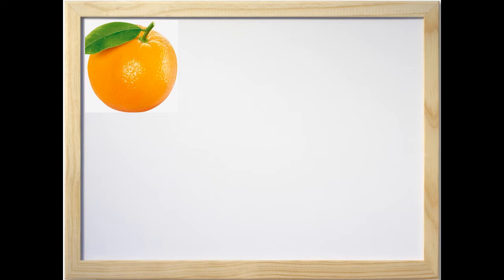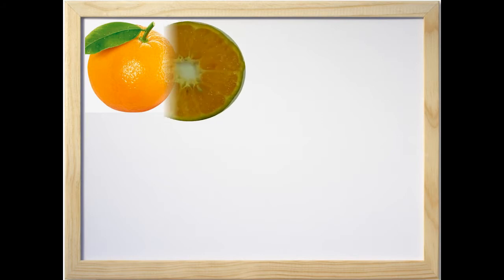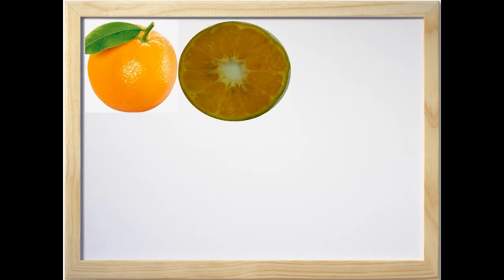I will cut this orange into thin slices. Can you see the slice? What is the shape of this slice? Yes, it is in the shape of a circle. Then what can be the circumference of this slice? The circumference of this circular slice will be 2πr.